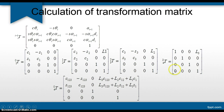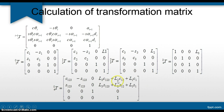Multiplying all these matrices together, we obtain the transformation 0T4, which represents the transformation of point four with respect to the reference coordinate system zero, given by this particular matrix.